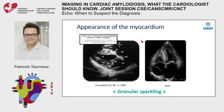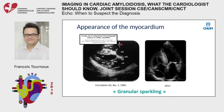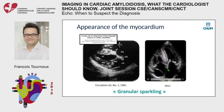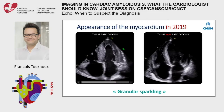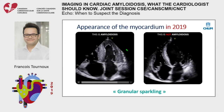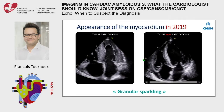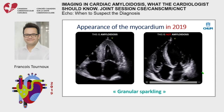The first thing I learned about echo and amyloidosis was the granular sparkling texture of the myocardium — described almost 40 years ago. With older machines we could still appreciate this texture, but with new machines in 2019 and their processing algorithms, we don't even have the focus anymore. It becomes very hard to distinguish. So granular sparkling is not really specific.